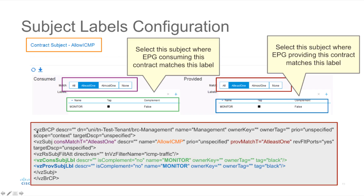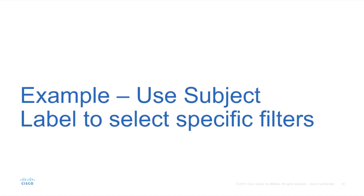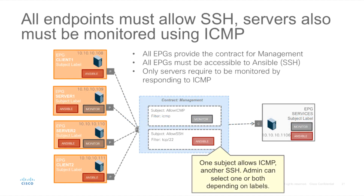This is the XML configuration where we can see the matching fields for configuring the subject label configuration. We will look at an example of how we can use this. Let's imagine that we have a set of four EPGs — the same we've used in other demos with the same IP addresses — Client1, Server1, Server2, and Client2.